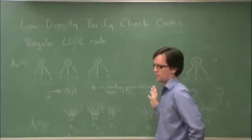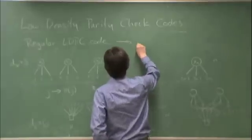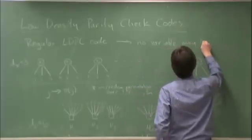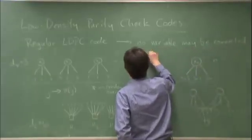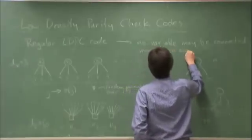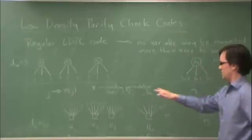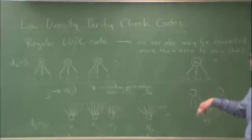Now there is one thing to be careful of. No variable may be connected more than once to any check. What you can do is apply this permutation and check to make sure that criterion is satisfied. If it's not, you can rearrange edges arbitrarily, or you can just throw out the whole permutation and find another one and check again.